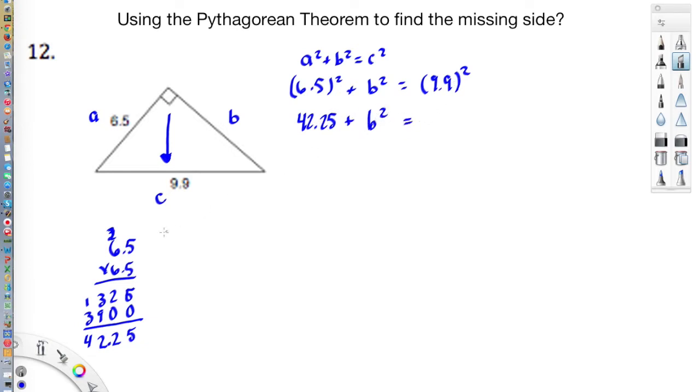Plus B squared is equal to 9.9 times 9.9. Well, 9 times 9 is 81. Carry the 8. 9 times 9 is 81, plus the 8 would be 89. Put a 0 there. 9 times 9 is 81. Carry the 1. 9 times 9 is 81, plus the 8 is 89 again. 1, 10, carry the 1. 18, carry the 1. And that is 9. So I get, and then I have two decimal places in my answer, so I'm going to get 98.01.